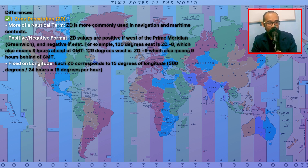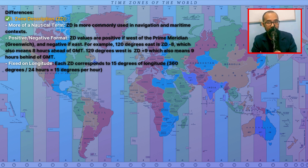Zone description is fixed on longitude — each zone description corresponds to 15 degrees of longitude, derived from 360 degrees divided by 24 hours, which equals 15 degrees per hour.